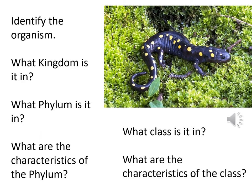For any organism on the handout, we could ask you to identify the organism, what kingdom it's in — it's all Kingdom Animalia today — what phylum it's in, what class it's in, what are the characteristics of the kingdom, phylum, or class. We could tell you that you found a new species that has two lives — which class would you put it in? Or you found a new species with spiny skin — which phylum? Be sure to know all of the information on the handout.